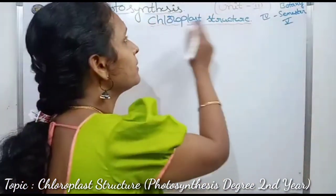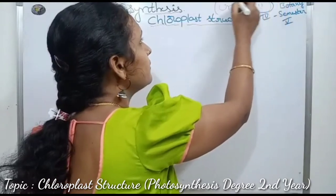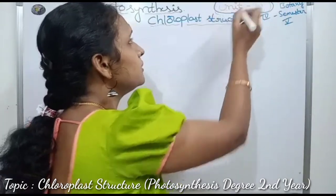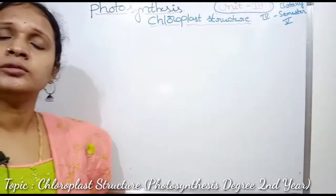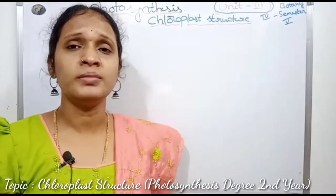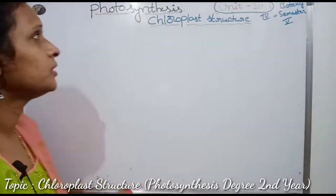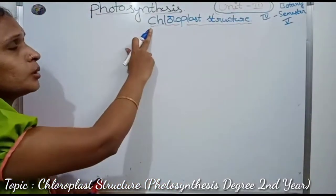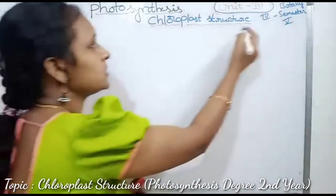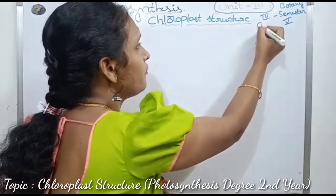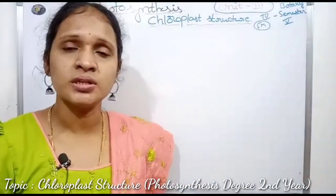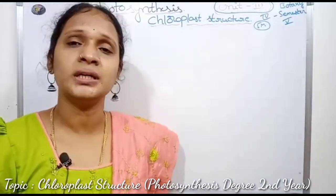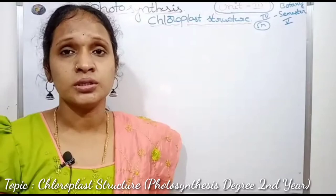Now we will talk about the third unit lesson. The third unit is named photosynthesis. One of the topics is chloroplast structure. Chloroplast structure is a 5 marks question and a very important question.